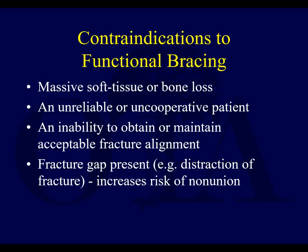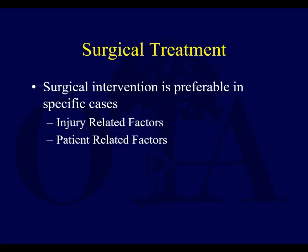Contraindications to functional bracing are bad open fractures, massive soft tissue loss, bone loss, and an unreliable or uncooperative patient — a really good example being a hospitalized patient with a head injury laying supine. Another contraindication is an inability to get or maintain acceptable alignment, and if you have significant fracture gapping, that can increase the risk of nonunion. So surgical intervention is preferable in specific cases, with many factors playing a role related to both the injury and patient-related factors.